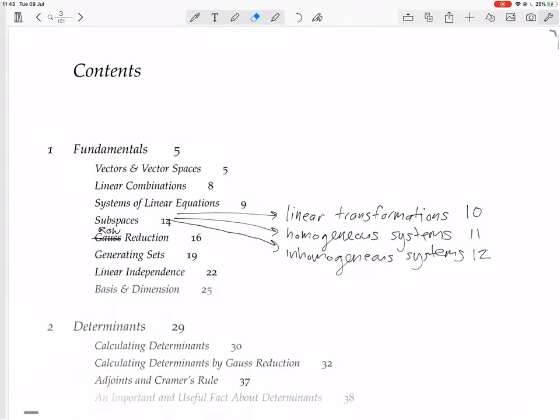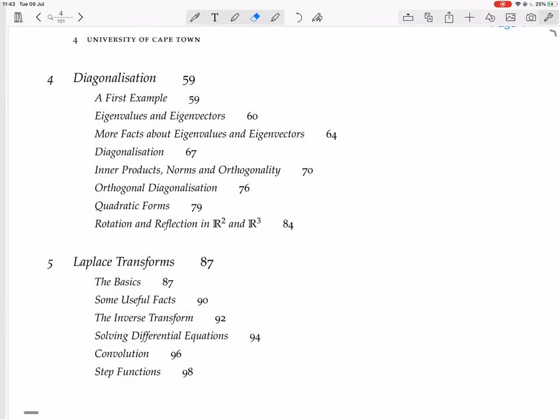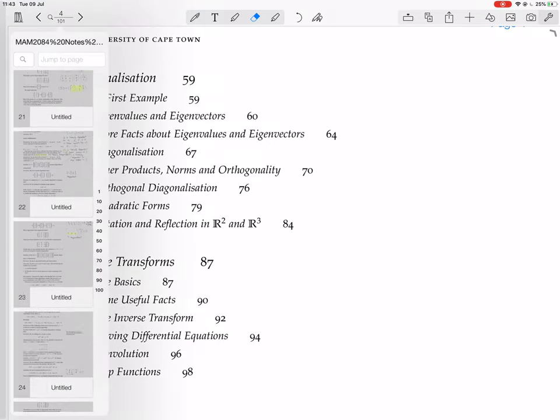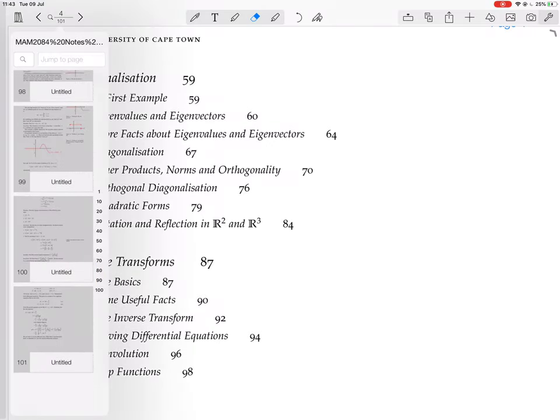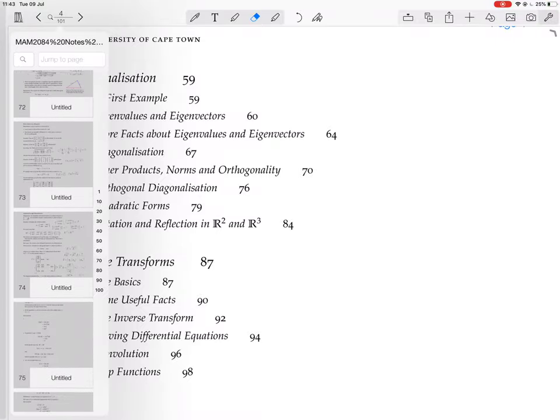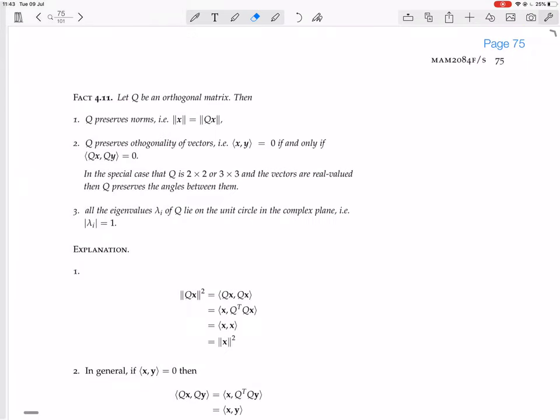So we were in the chapter on diagonalization, and we were looking at orthogonality. We were about to look at orthogonal matrices. Let's find that. Here we go.